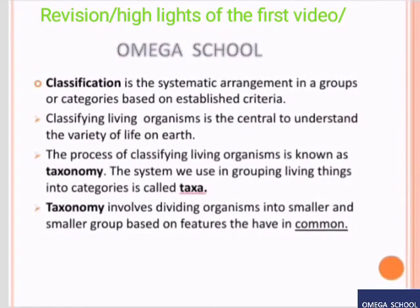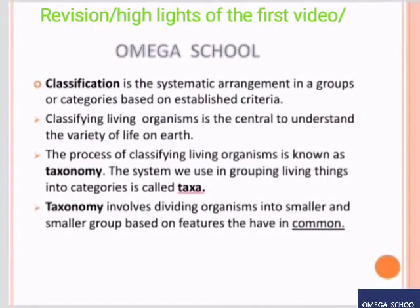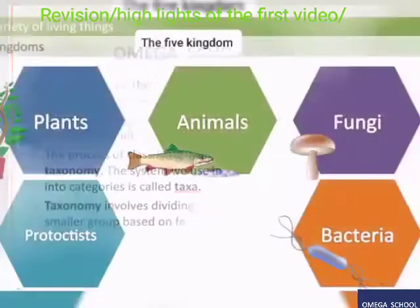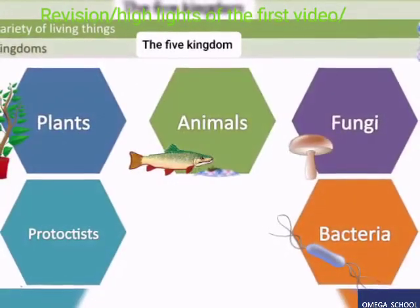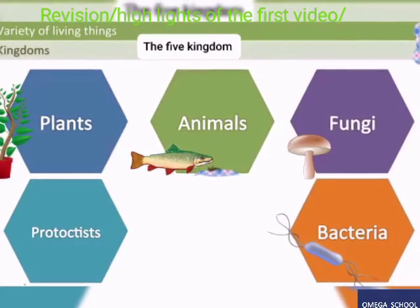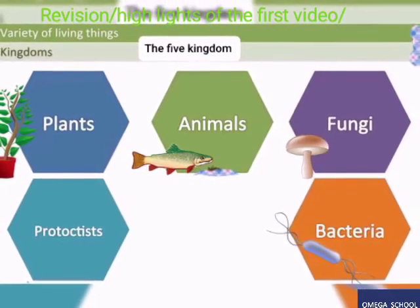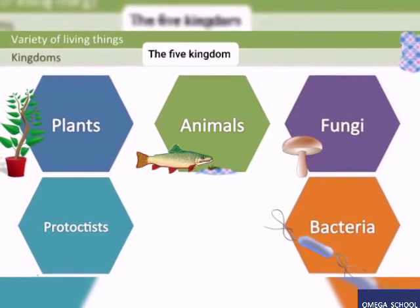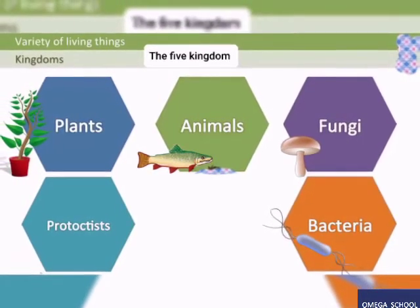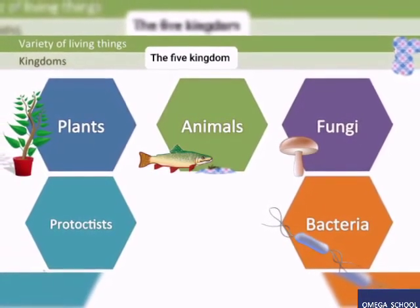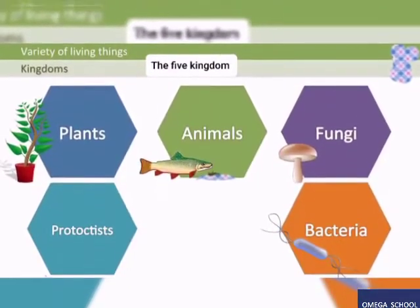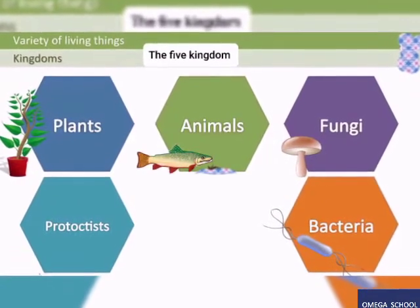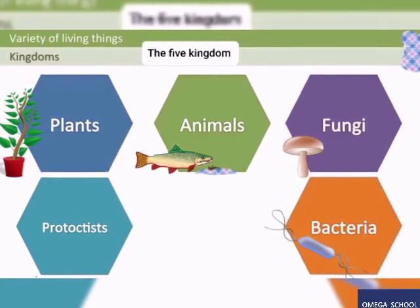There are five kingdoms: Kingdom Monera, which includes bacteria and blue-green algae; Kingdom Fungi; Kingdom Protista; Kingdom Plantae; and Kingdom Animalia. So far we have seen four of them.